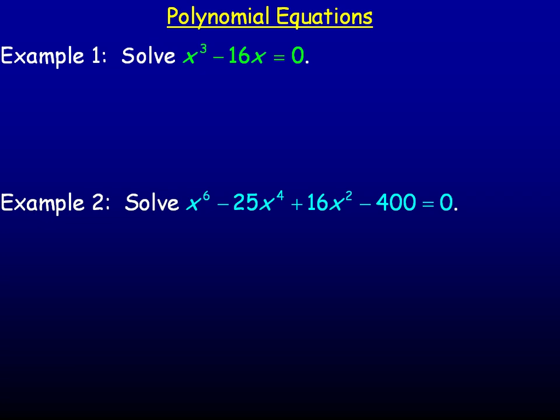This equation can be factored. Notice that there is a common x in the x cubed and the minus 16x as well. So if we factor an x out, we will have x and then x squared minus 16 as the other factor.